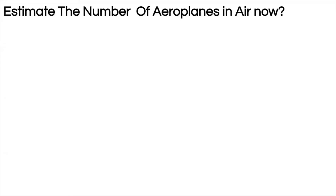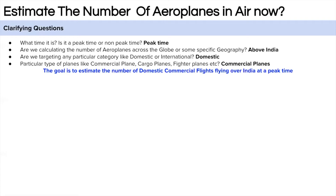So that you have a clear understanding of what is being asked in an interview and you don't miss things. The first question we can ask is about the time. Since we are asked to estimate the number of airplanes flying at this point in time, it is very critical to clarify about the time — there can be peak hours or non-peak hours. Let's assume the interviewer wants us to calculate during peak hours.